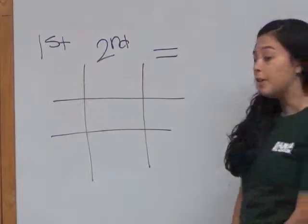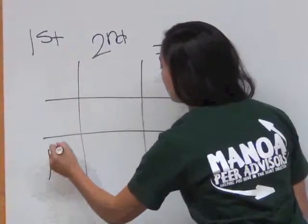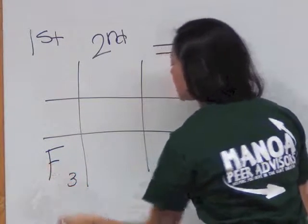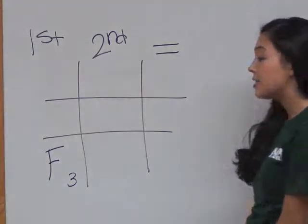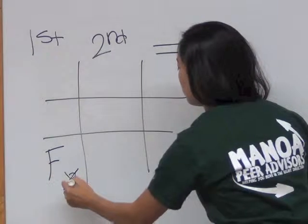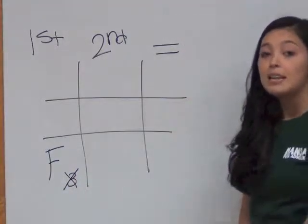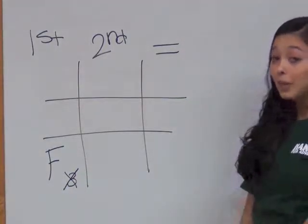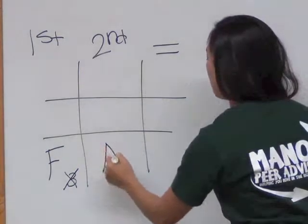Now in the first scenario, let's say a student takes a three credit course and receives an F. Now this is not a passing grade, so they will not receive those three credits. They take the course again, study really hard, and receive an A.